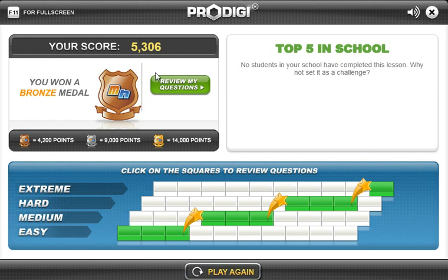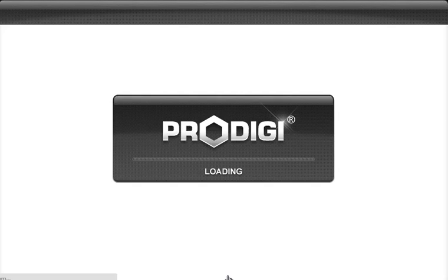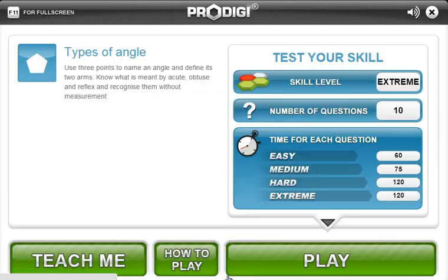So on this summary page you see how many points we scored. We needed 4,200 points to get a bronze medal, 9,000 to get silver and 14,000 points to get a gold medal. Now, let's play again and try and get ourselves a gold medal.